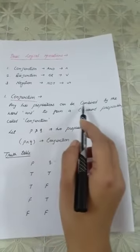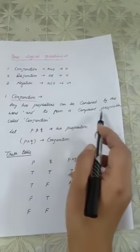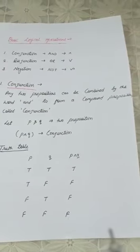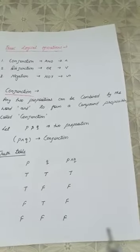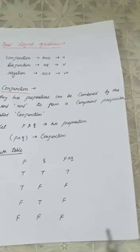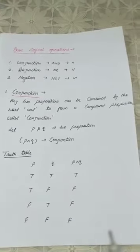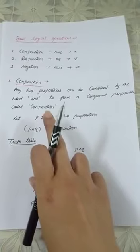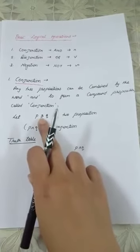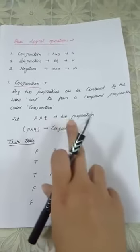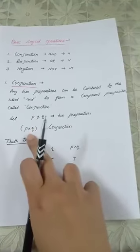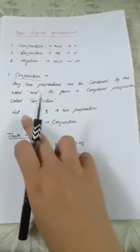Conjunction stands as 'and' in English language and notation is cap. Any two propositions can be combined by the word 'and' to form a compound proposition called conjunction. When you are adding any two propositions by combining them using the word 'and,' you use the connectivity 'and' to connect two different propositions, that is called conjunction. Instead of taking two different propositions, I have taken two variables P and Q and consider them as two propositions, and I combine them with connectivity 'and,' that is the cap symbol.